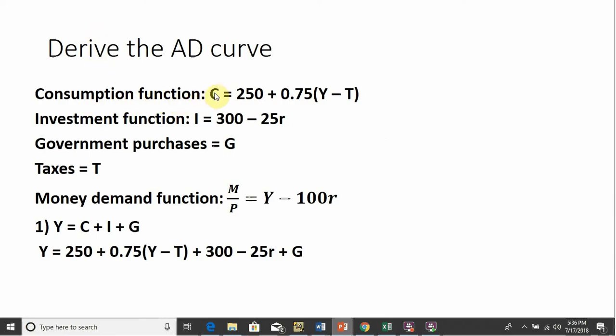The consumption function in the economy is given as C equals 250 plus 0.75(Y minus T), where Y is income and T is taxes. We have an investment function, I equals 300 minus 25r, and r represents the interest rate. We have government purchases that we'll call G, and we have taxes that we'll call T.